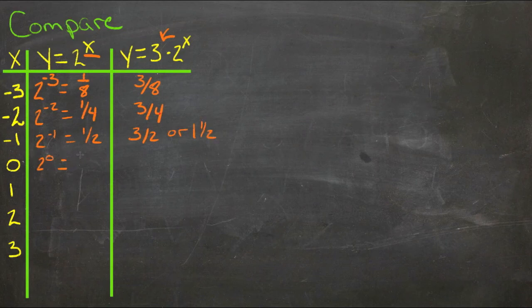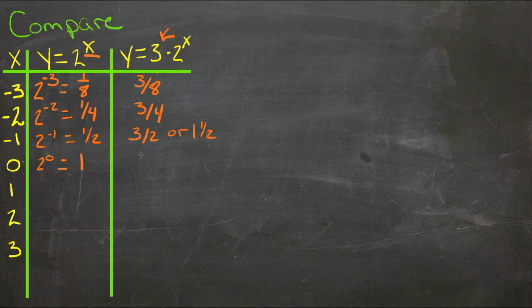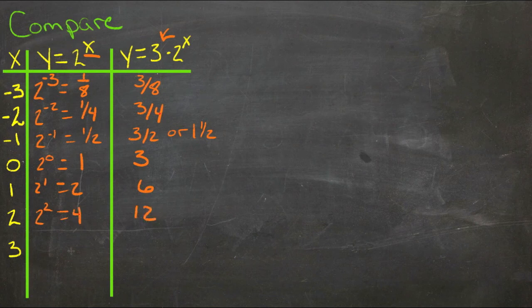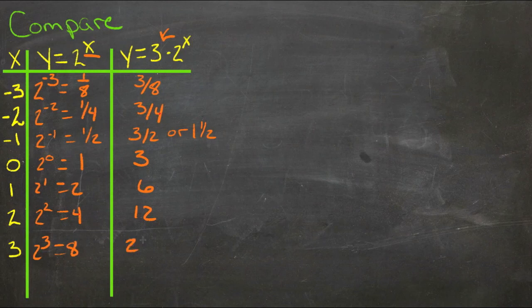2 to the 0, anything to the 0 is 1, so this one becomes 3. 2 to the 1st is 2, and 6. 2 squared is 4, 12, and 2 cubed is 8, 24.